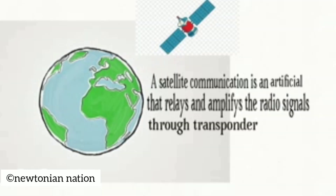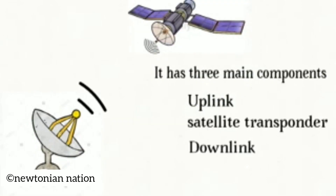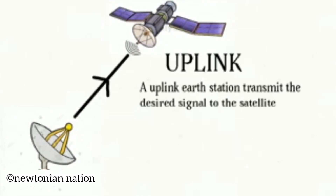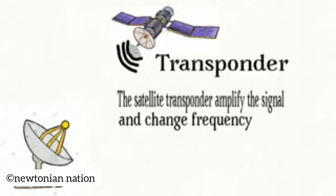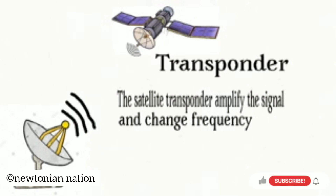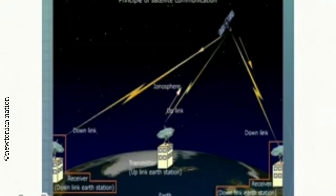Satellite Communication — a satellite communication is an artificial relay that amplifies radio signals. It has three main components: Uplink, Satellite Transponder, and Downlink. The uplink earth station transmits the desired signal to the satellite. The satellite transponder downlinks the signal back to the earth station and amplifies the signal while changing its frequency.